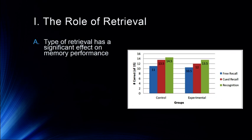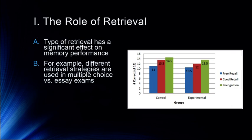Recognition memory, in an experimental context, is when you're given a list of words to study — say 50 words presented on the screen one at a time — and then you're presented with 100 words and have to determine which ones were presented earlier. Memory performance is highest in recognition, and there are a variety of reasons for that. These are all different types of retrieval, so the first thing to establish is that retrieval matters. We use different retrieval strategies all the time — in a multiple choice exam versus an essay exam, you use different retrieval processes.